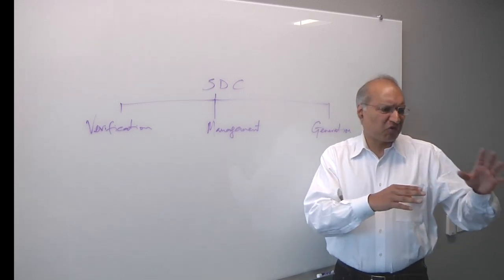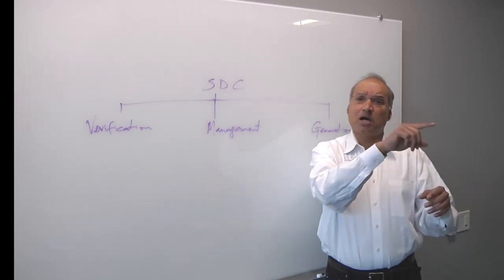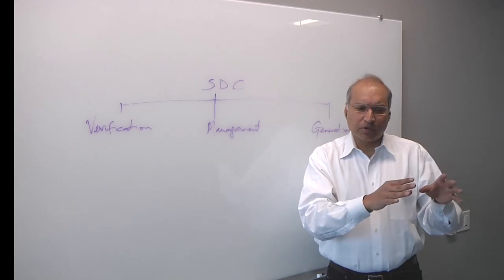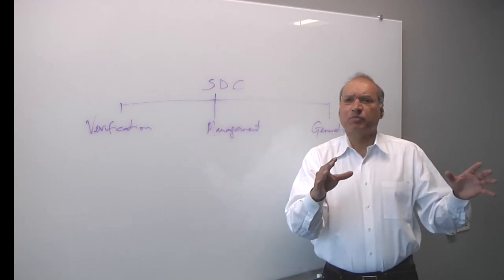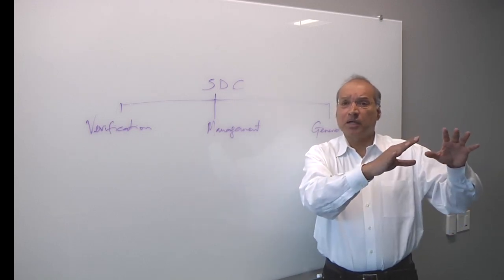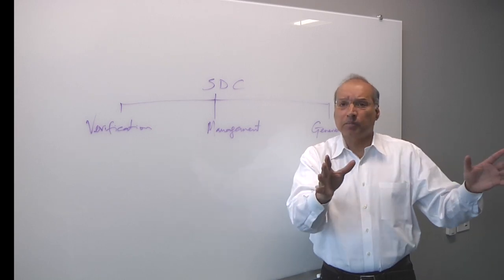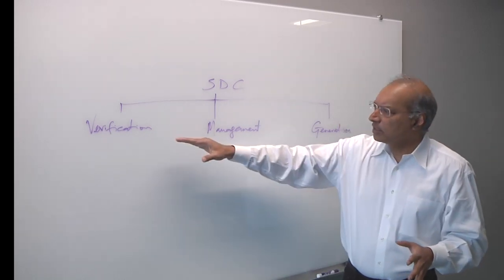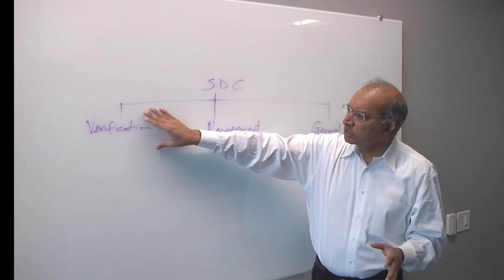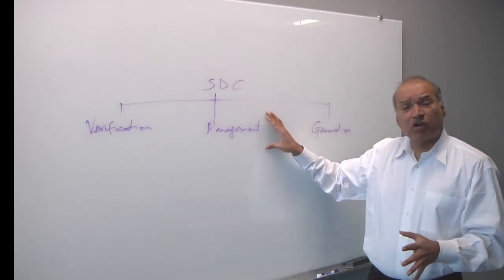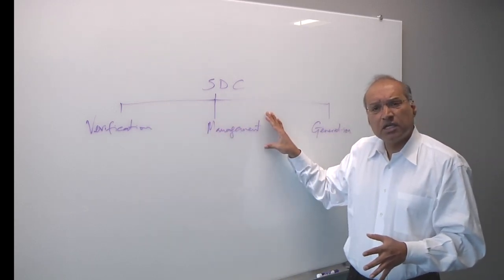They start writing wildcards. They say, OK, maybe the name could go from something to something, so I'll write a star there. And as soon as they start putting wildcards, they open themselves up to mistakes because the wildcard may apply to a situation where you don't want it to apply. So the ability of a tool to take some constraints and automatically apply them to a transformed version of the design is key.